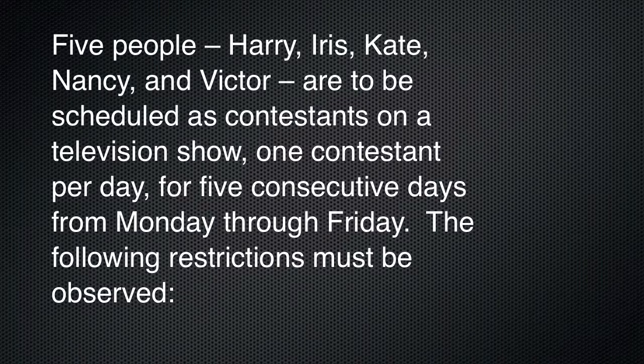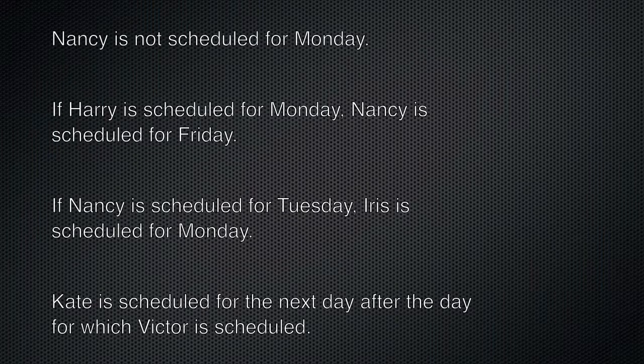Here's the game. Five people — Harry, Iris, Kate, Nancy, and Victor — are to be scheduled as contestants on a television show, one contestant per day for five consecutive days from Monday through Friday. The following restrictions must be observed: Nancy is not scheduled for Monday. If Harry is scheduled for Monday, Nancy is scheduled for Friday. If Nancy is scheduled for Tuesday, Iris is scheduled for Monday. Kate is scheduled for the next day after the day for which Victor is scheduled.